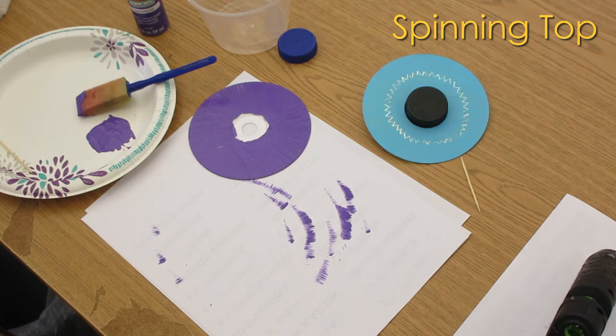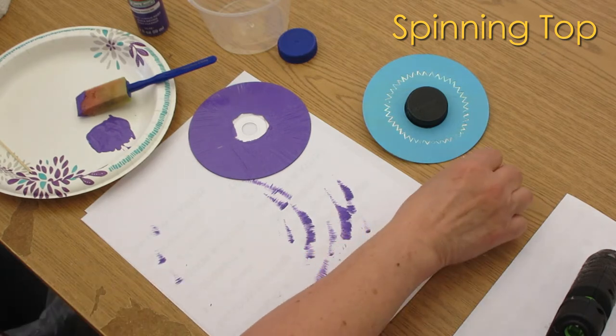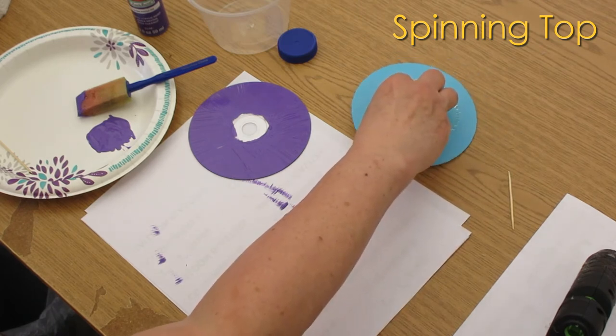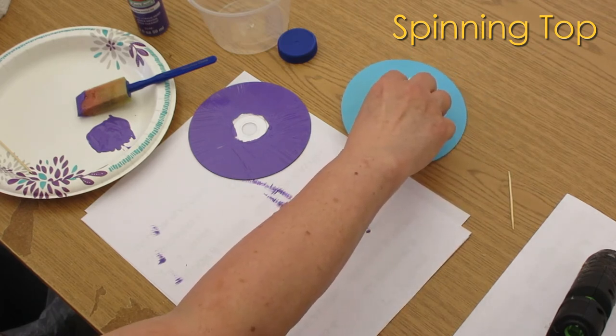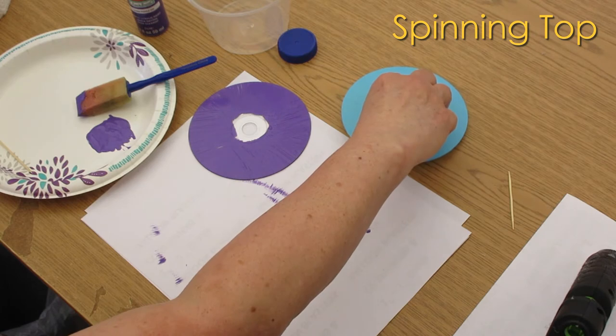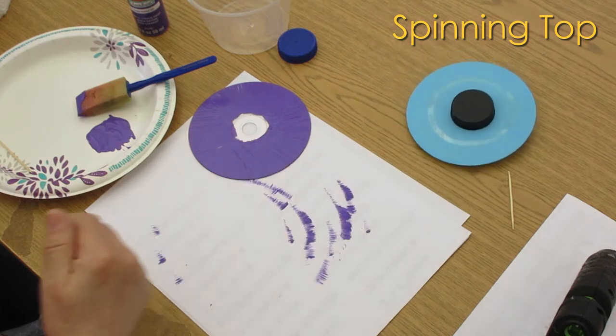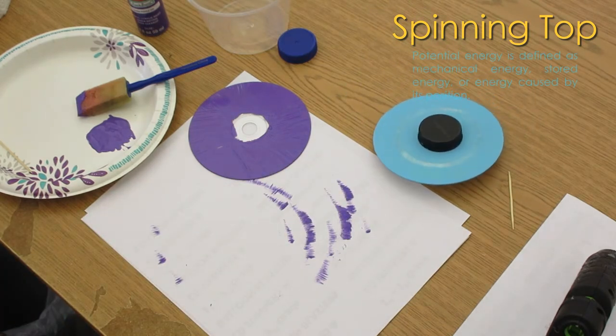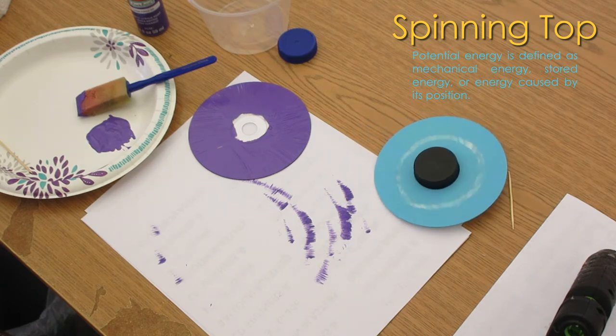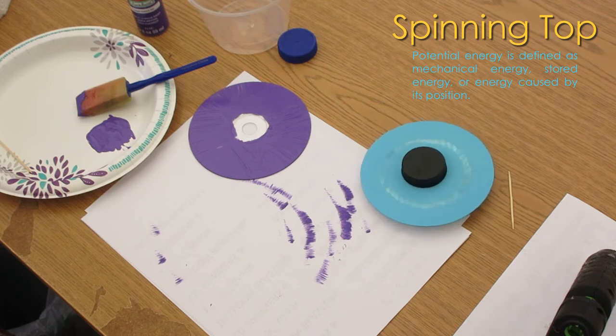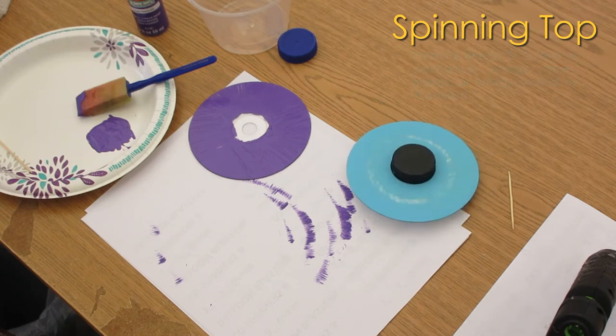When you initially spin the top, which I'm going to do here with my one I've already finished, you're turning the top stored energy, which is called potential energy. Then what you're doing, you're turning it into energy of motion as it spins, which is called kinetic energy.